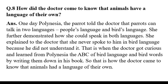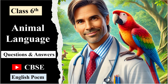Question eight: How did the doctor come to know that animals have a language of their own? One day Polynesia the parrot told the doctor that parrots can talk in two languages: people's language and bird language. She demonstrated how she could speak in both languages. She explained that she never spoke to him in bird language because he did not understand it. That is when the doctor got curious and learned from Polynesia the ABC of bird language, writing them down in his book. So that is how the doctor came to know that animals had a language of their own.